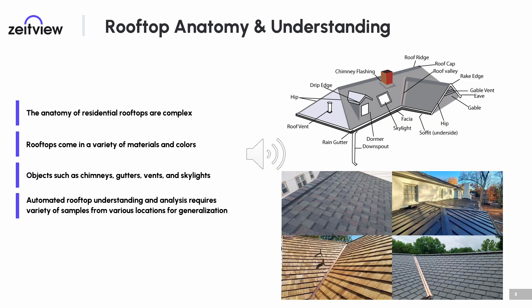Rooftops and their anatomies are complex, with an endless variety of compositions. They can be made of many different materials with various colors and reflective properties. Furthermore, rooftop objects such as chimneys, gutters, vents, and skylights can be located almost anywhere on top of a roof. All this to say that automated rooftop understanding and analysis requires a dataset containing a wide variety of properties from various locations and settings for generalization.